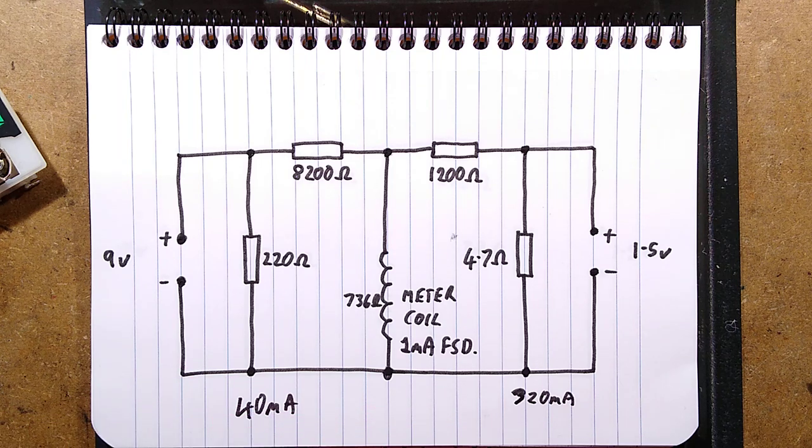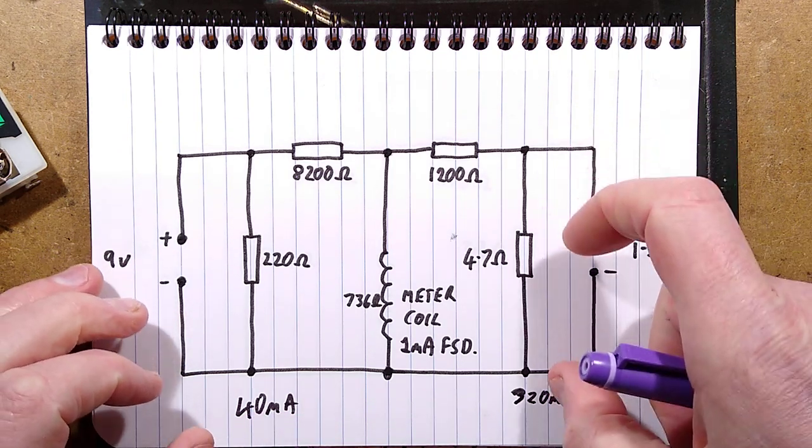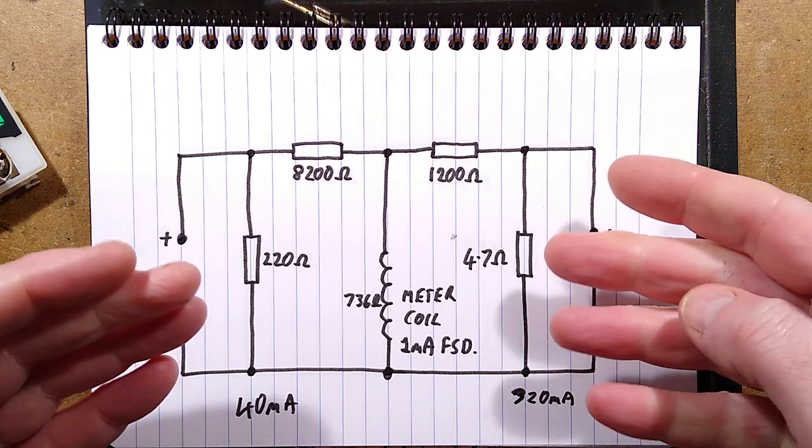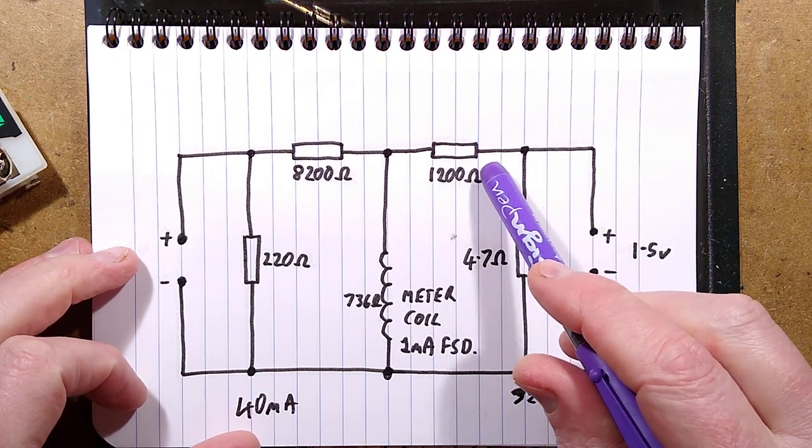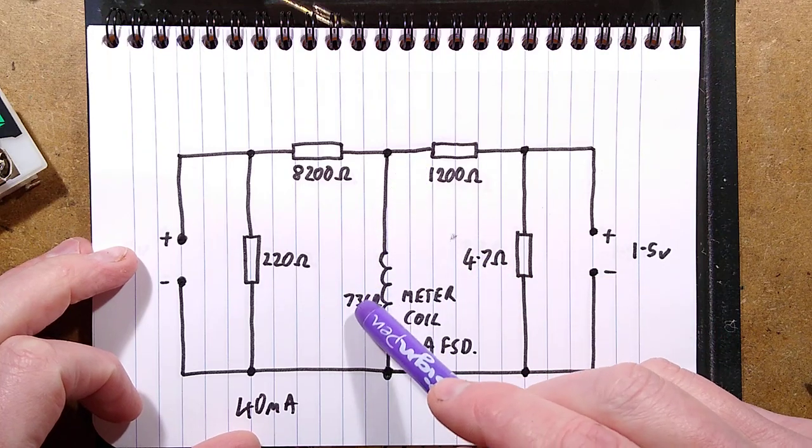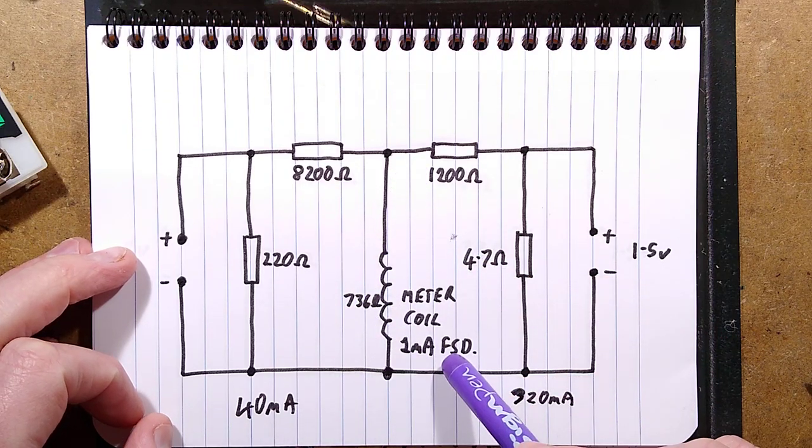So when you connect the battery, it pulls the voltage down if it's a well-used battery. And that will determine then how much flows through this resistor in series with that resistor for the 1 milliamp full-scale deflection.